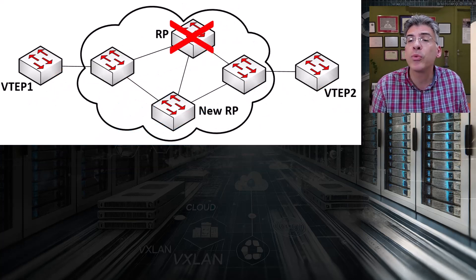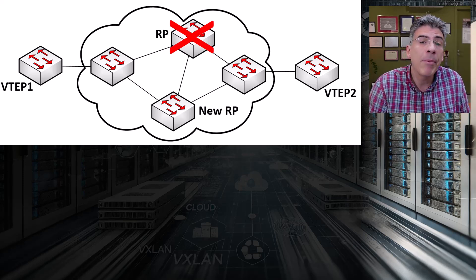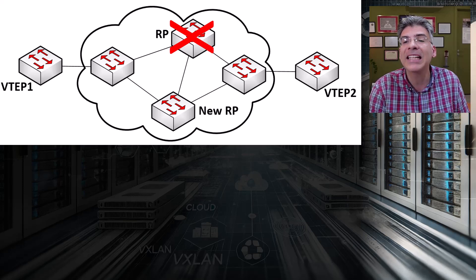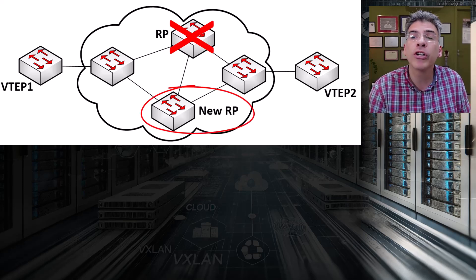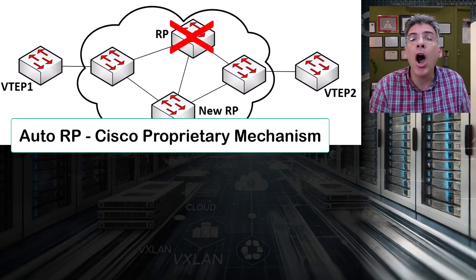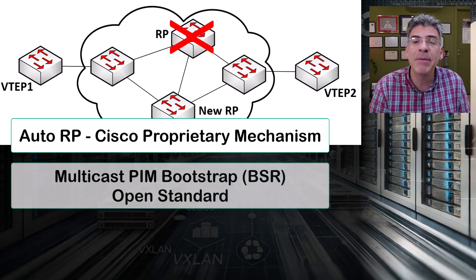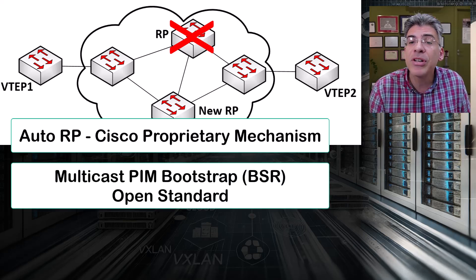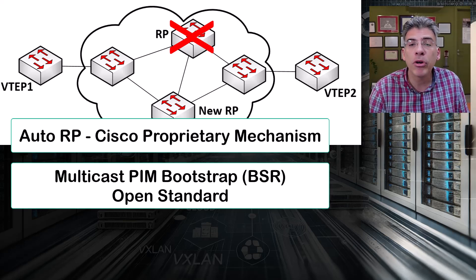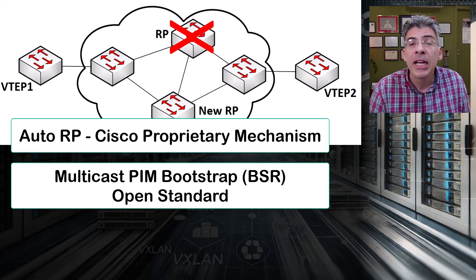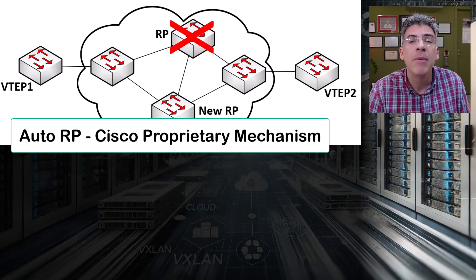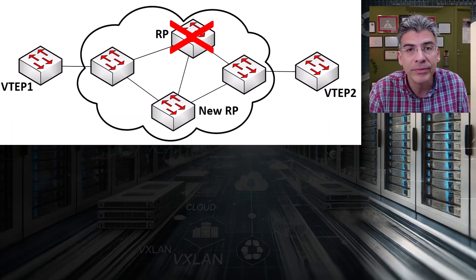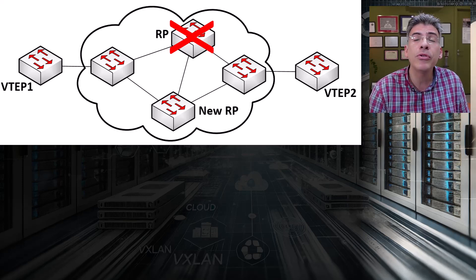There are several solutions that will provide us with dynamic redundancy for our RP. There are a couple of RP discovery protocols that can automatically and dynamically detect an alternative RP in the event that the original RP fails. For example, you can use Cisco's proprietary Auto-RP solution, or you can use the multicast PIM Bootstrap Protocol, or BSR. The latter is an open standard supported by multiple vendors. Both of these protocols provide dynamic discovery and automatic backup of RPs in the event of a failure. However, although these solutions are good, they are inadequate for use within a data center or cloud infrastructure because their failover processes are too slow, and that would result in unacceptable outages. So these solutions are out.